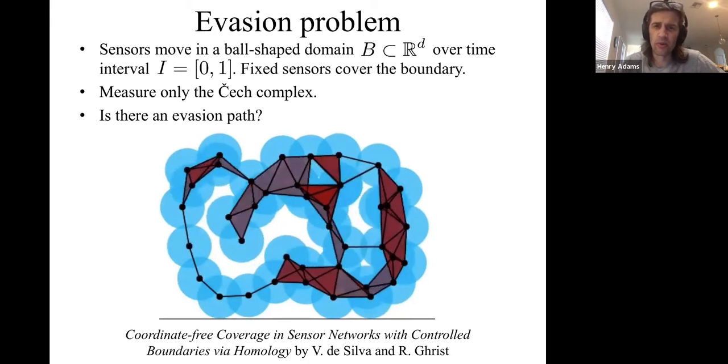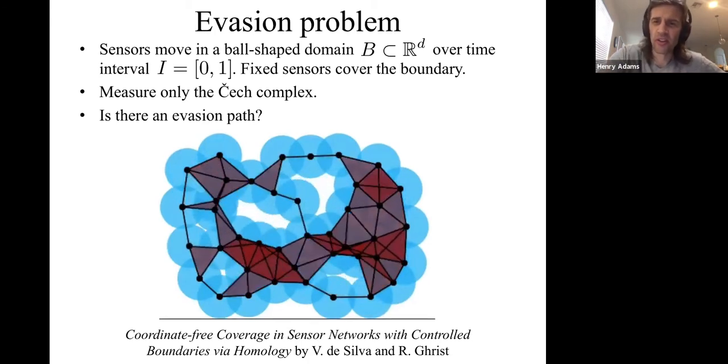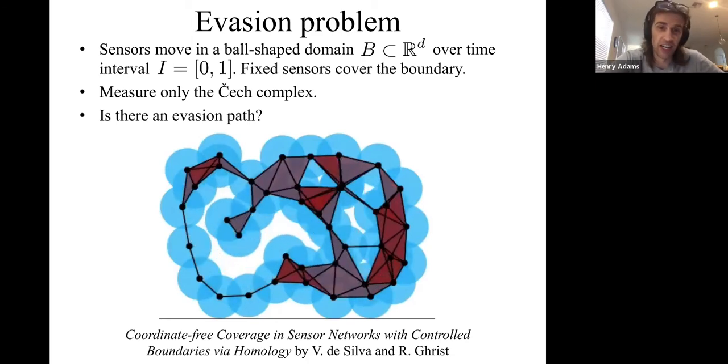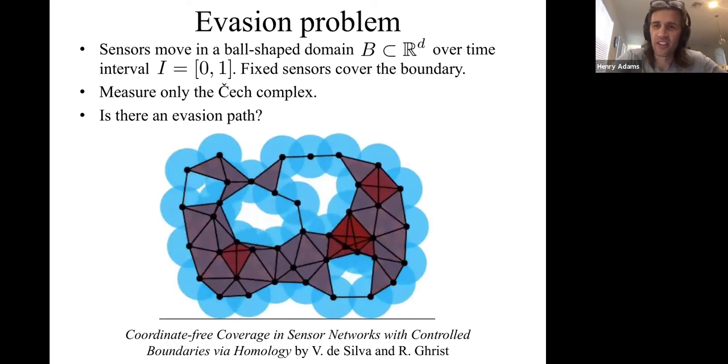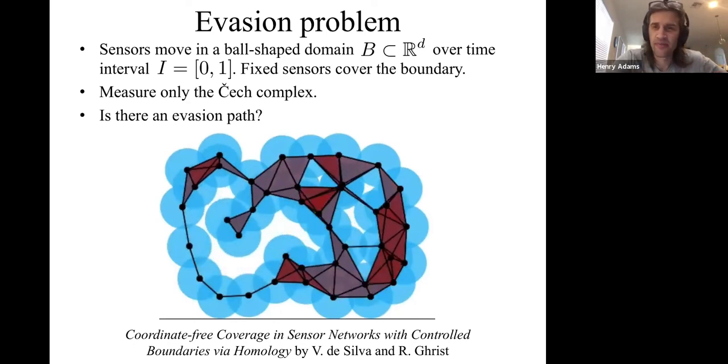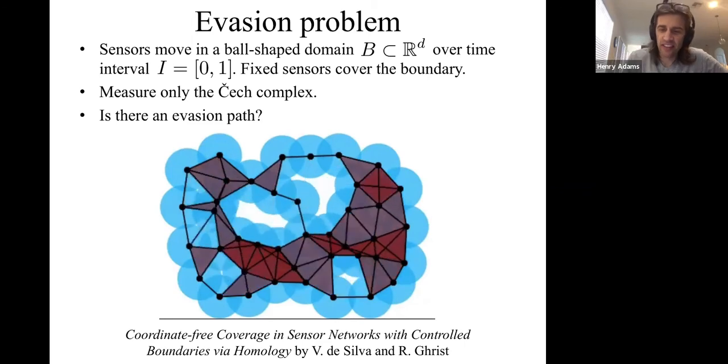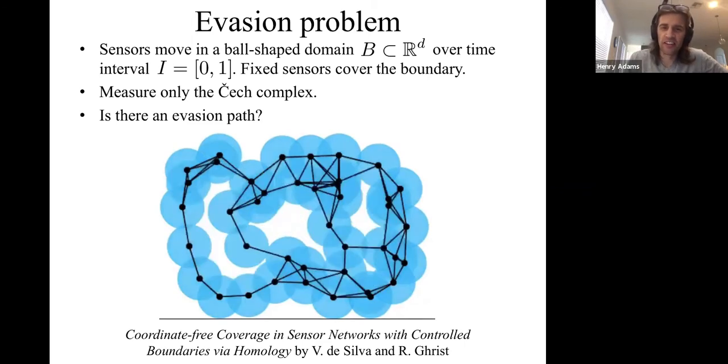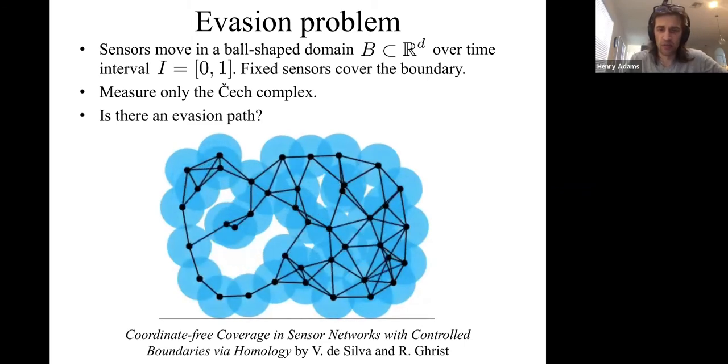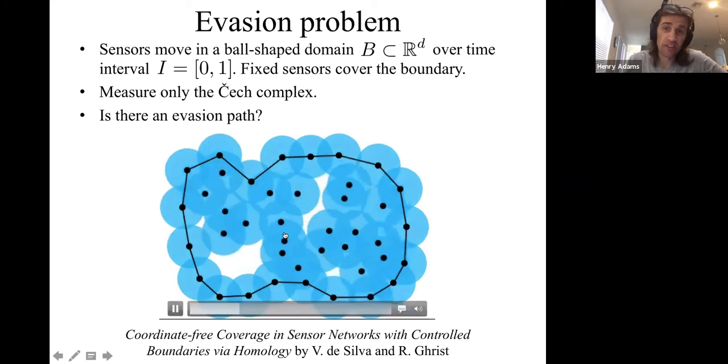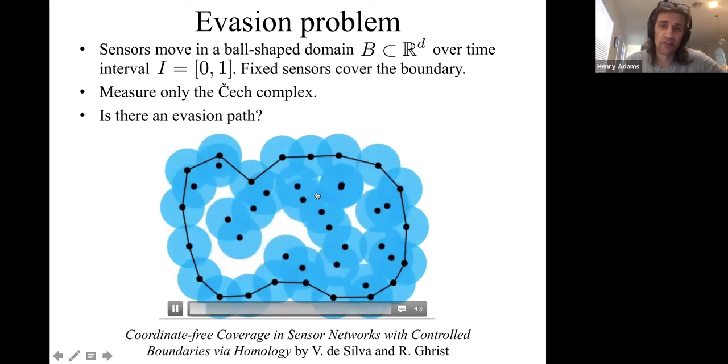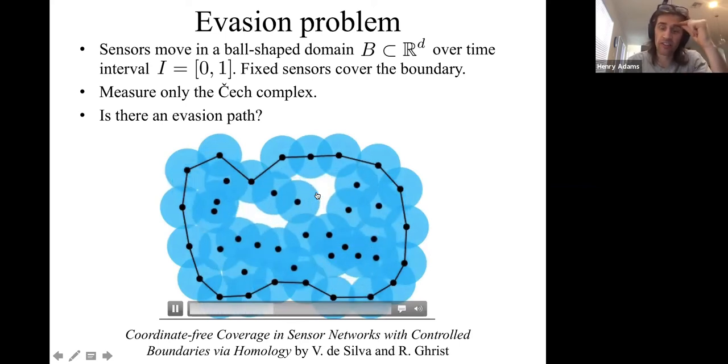We'll assume we can measure a little bit more. So we'll assume that the sensors can measure when there's points of triple intersection, at which point we glue in these red triangles. Let me describe the problem that we're trying to solve. We're trying to ask, is it possible for some intruder to remain in the unsensed region from start time zero all the way to end time one?